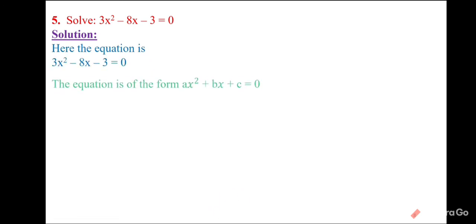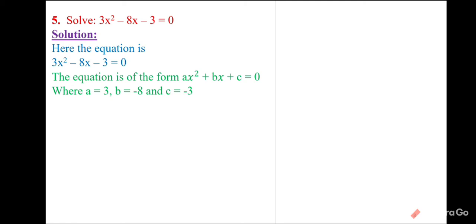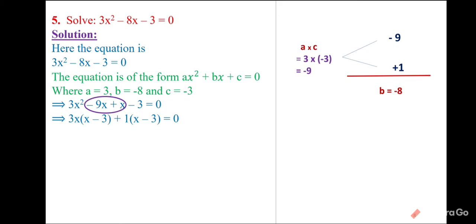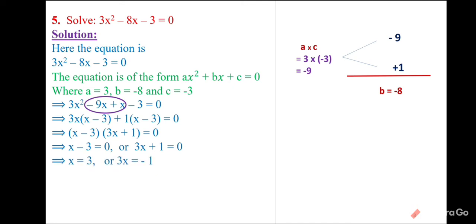One more problem: comparing with ax² + bx + c = 0 gives a = 3, b = −8, c = −3. Here a × c = 3 × (−3) = −9 and b = −8. Two numbers with product −9 and sum −8: −9 and +1. Splitting: 3x² − 9x + x − 3 = 0. Grouping: 3x(x − 3) + 1(x − 3) = 0. So (x − 3)(3x + 1) = 0, giving x = 3 and x = −1/3.